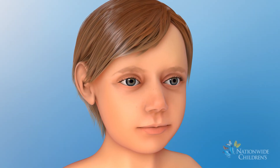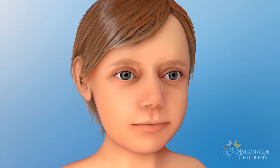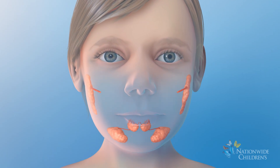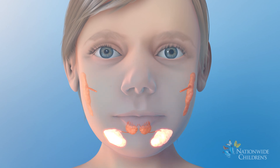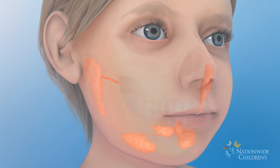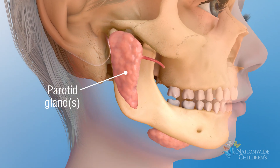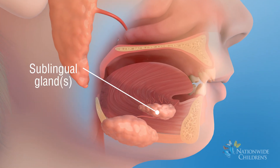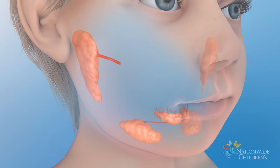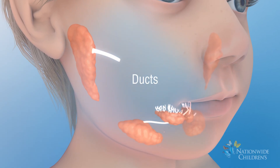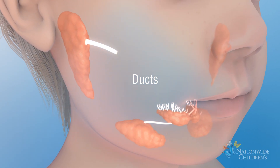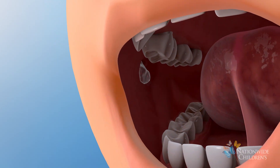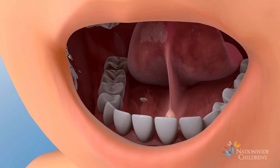In order to understand what a ranula is, it's important to know about a few key structures near the mouth. Saliva is made by three main pairs of salivary glands in the mouth: parotid glands, submandibular glands, and sublingual glands. Each gland has hollow tubes, called ducts, that open into the mouth. The saliva, or spit, flows from the salivary glands through the ducts into the mouth.